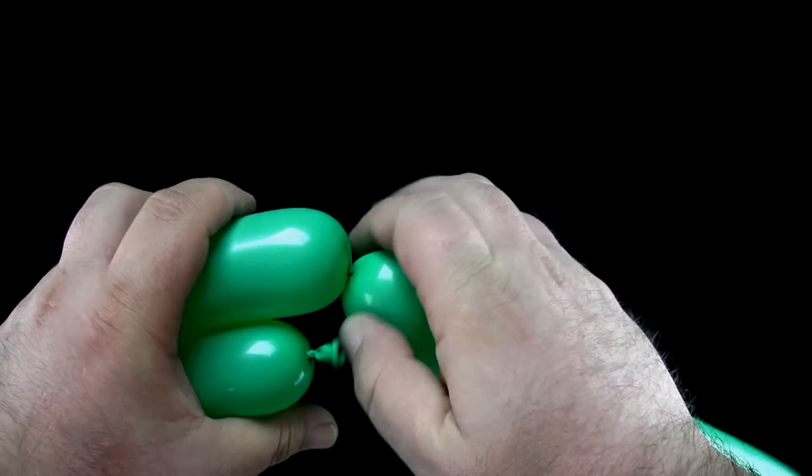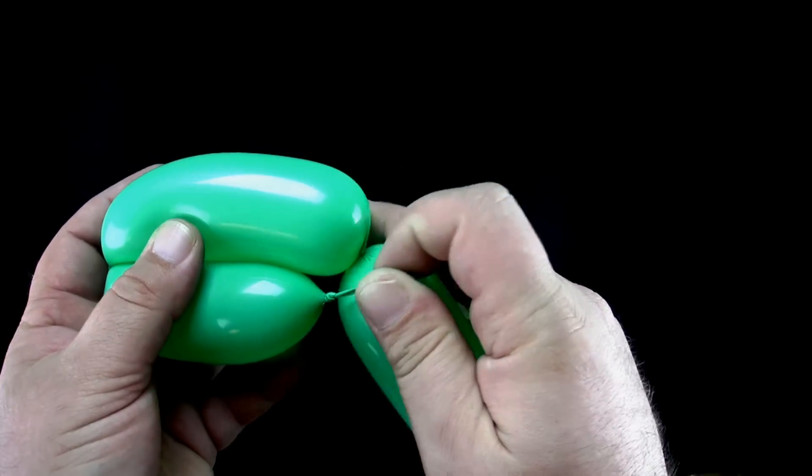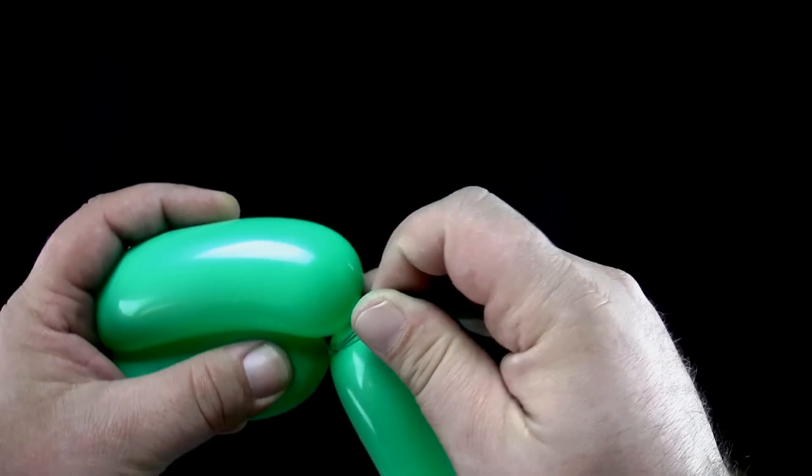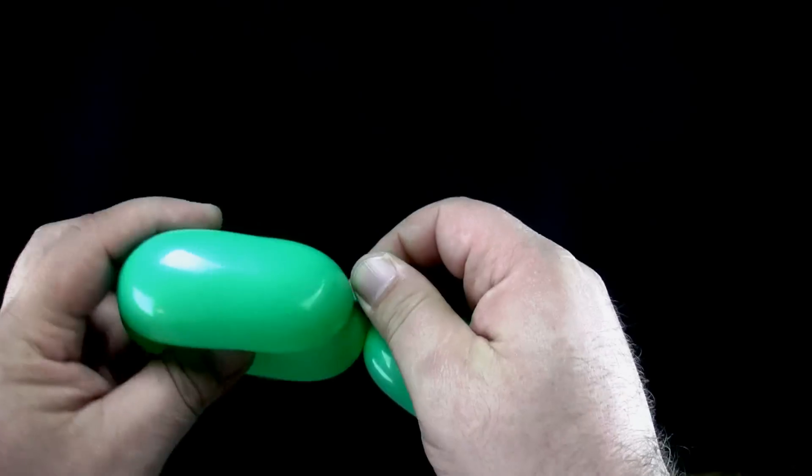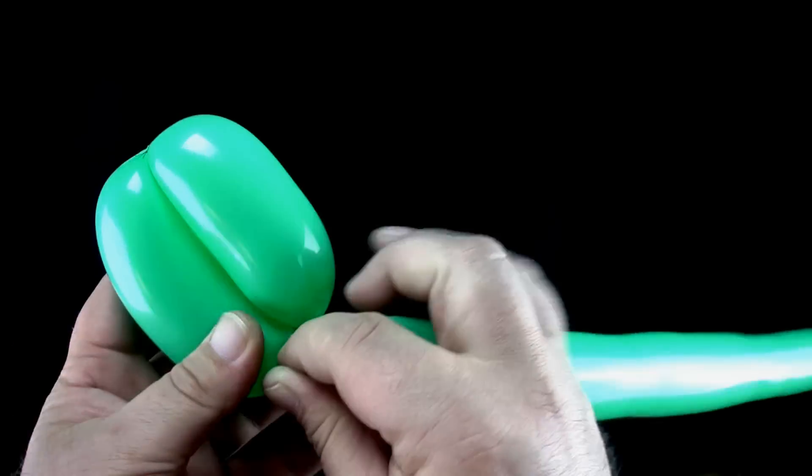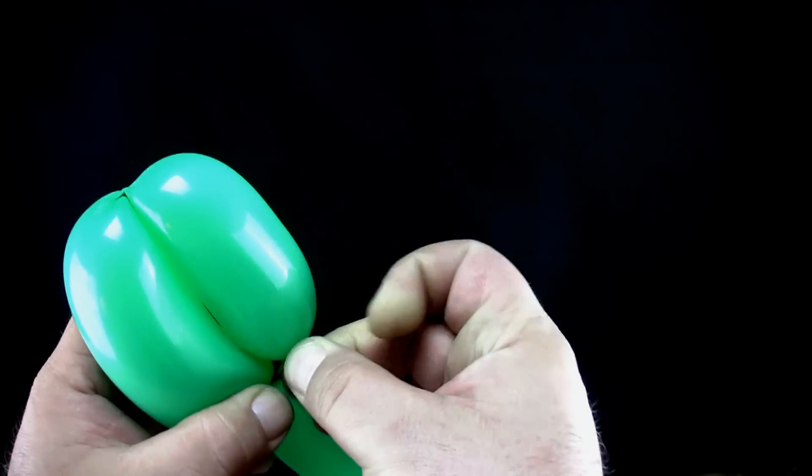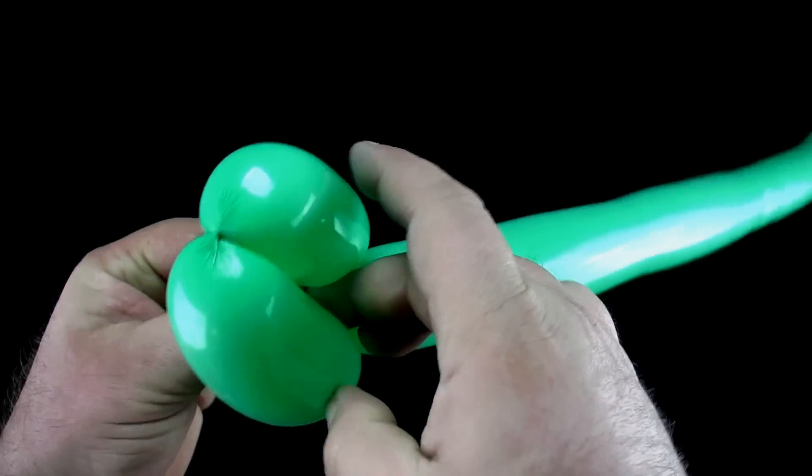Wrap the nozzle around the twist in between the second bubble and the rest of the balloon. Tuck the nozzle in between the first two bubbles in order to keep it out of sight.